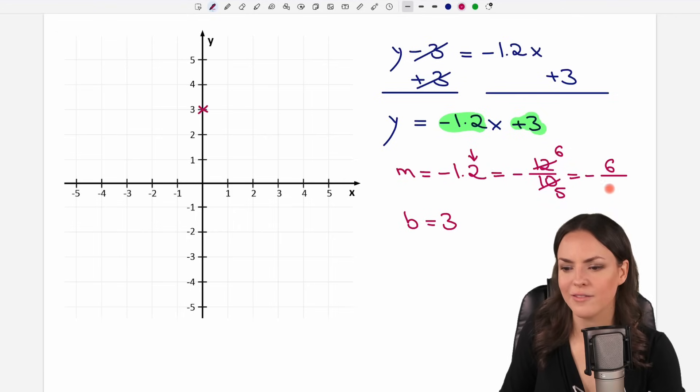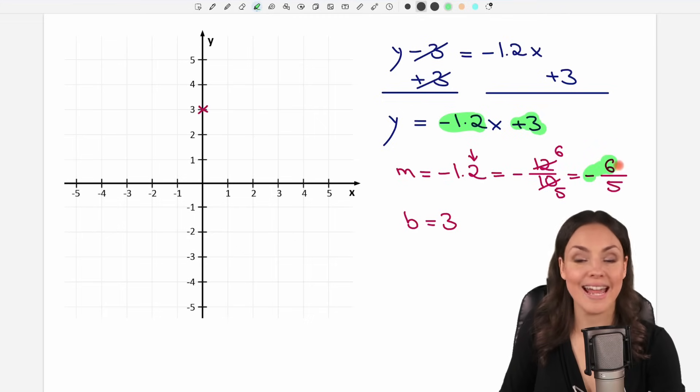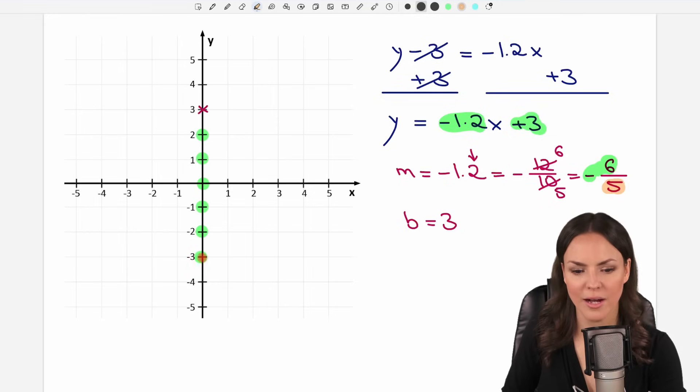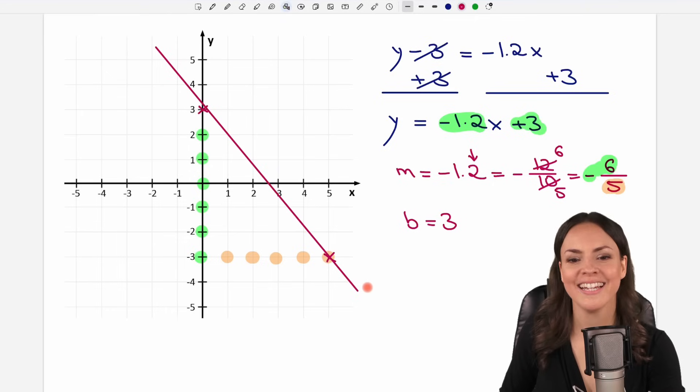So we have negative 6 over 5 for our slope. So from here we start with the rise. Be careful that you need the sign as well. So the rise is negative 6, which means from here we go 6 down: 1, 2, 3, 4, 5, 6 to the negative direction. And then we run 5 in the positive direction: 1, 2, 3, 4, 5. We put our x here. This time our line looks like this. Almost perfect. And we found the line to this equation here.